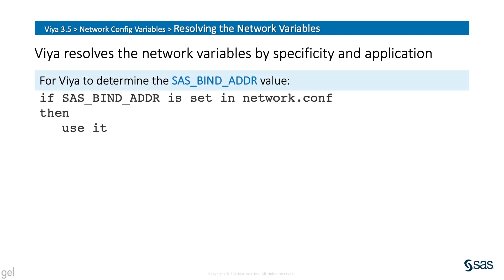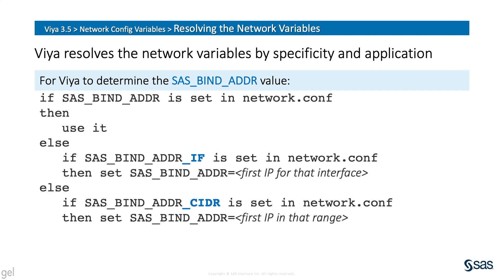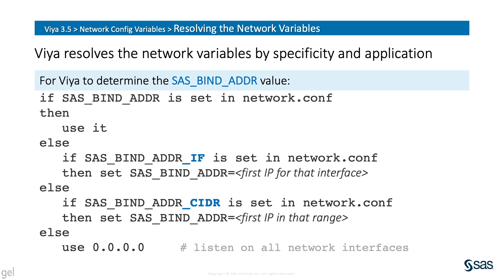Now let's look at how Viya resolves SAS_BIND_ADDR. First, if a value for SAS_BIND_ADDR has been provided, then use that. But if not, check if SAS_BIND_ADDR_IF has been set instead — if it has, then SAS_BIND_ADDR will be set to the first IP address found for the specified network interface. Else, the next check will be SAS_BIND_ADDR_CIDR — if set, SAS_BIND_ADDR will be set to the first IP address found in that range. Finally, if none of those variables have been set, then SAS_BIND_ADDR will default to 0.0.0.0, which means Viya services should listen on all network interfaces of the host for traffic. Do not set all of these values for a Viya host — just provide one. If multiple are given, Viya will only implement the most specific.